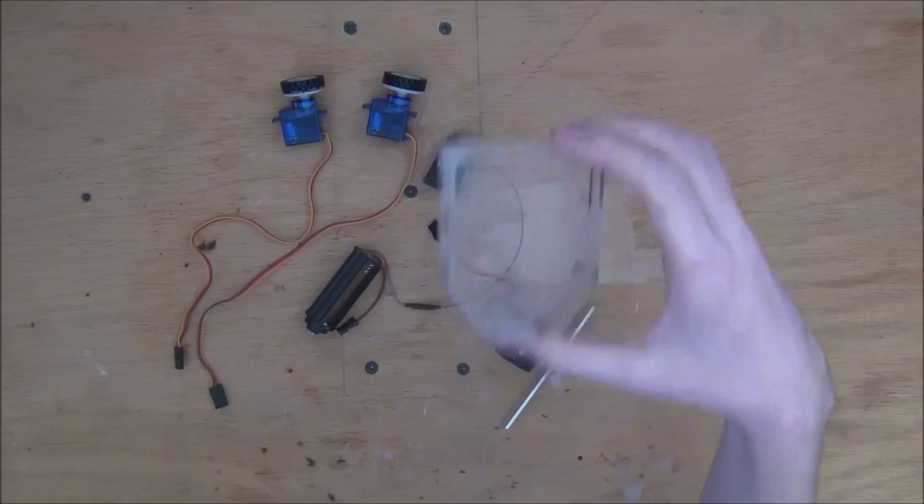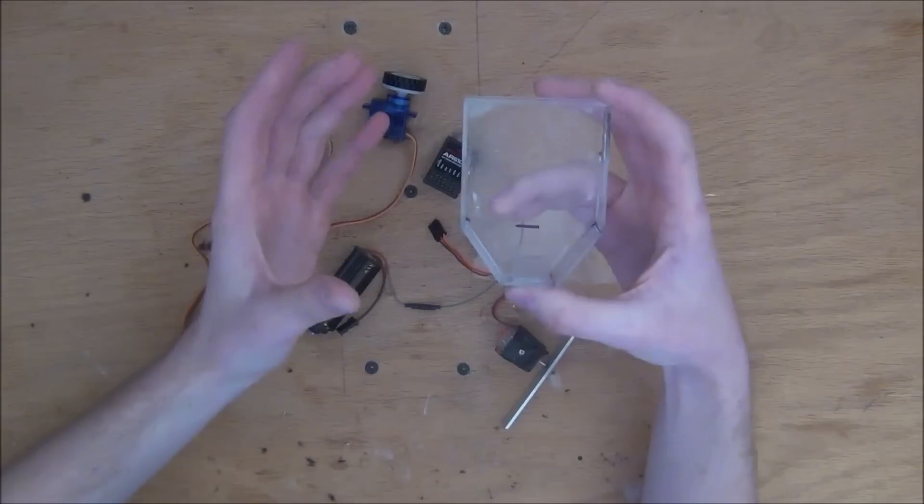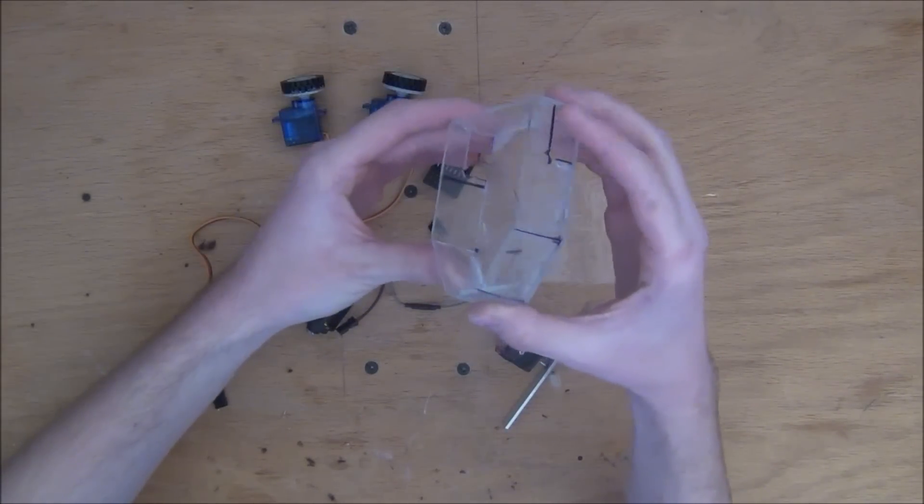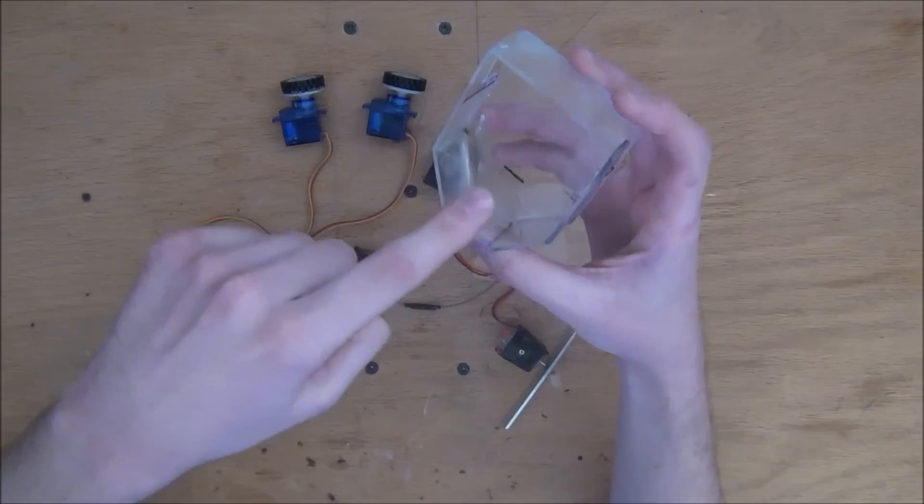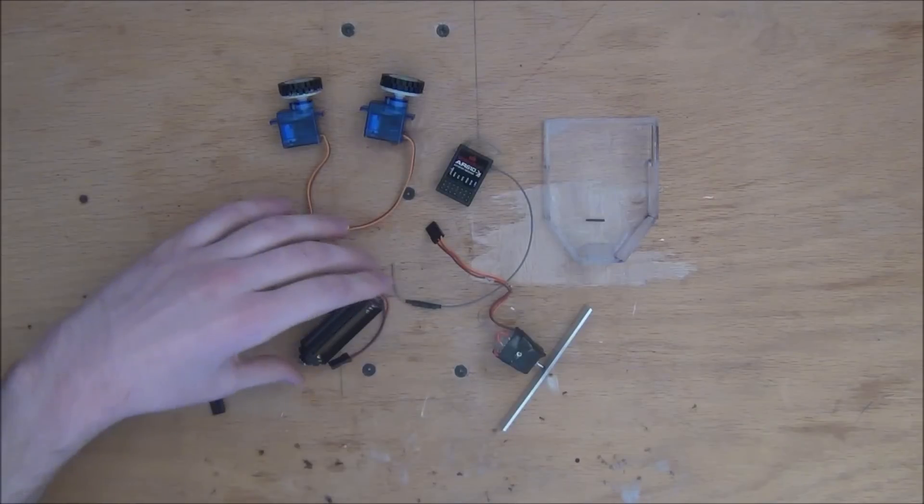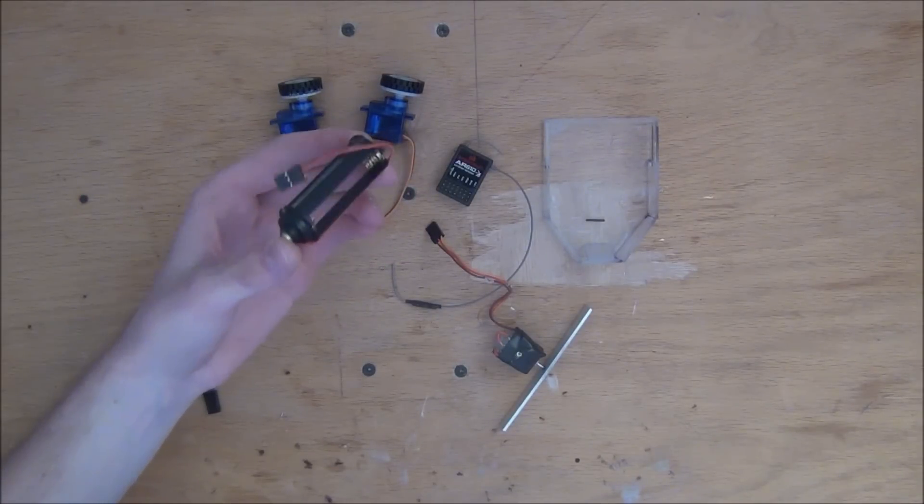The BattleBot chassis itself, which is made out of plexiglass and glued together. There's not a whole lot that's special about this. It's just big enough to fit everything inside it. I have two windows cut out for the drive motors, and then I have a small angled piece in the front to mount the spinner motor on. We then have the battery pack that's actually a AAA holder that holds three AAAs.